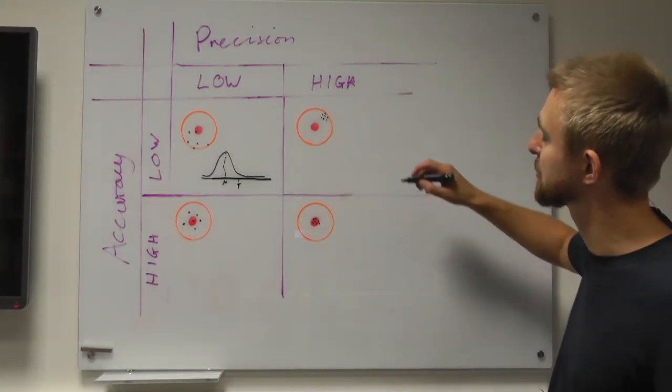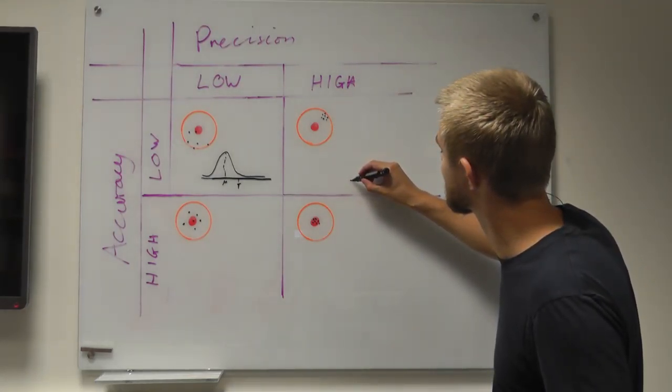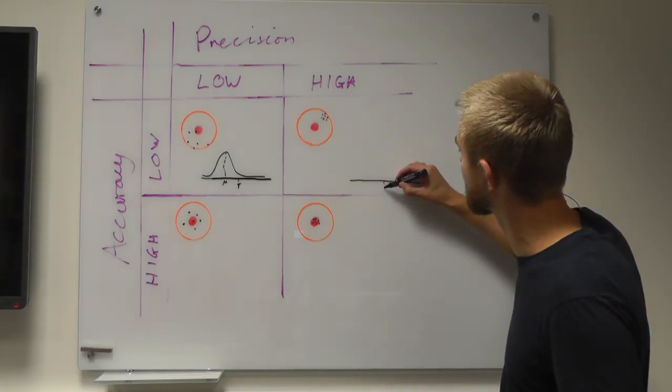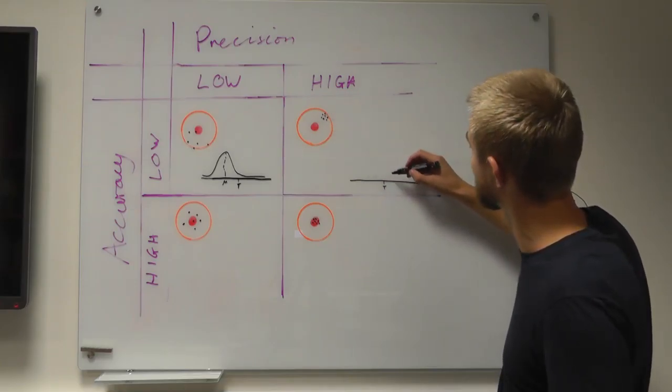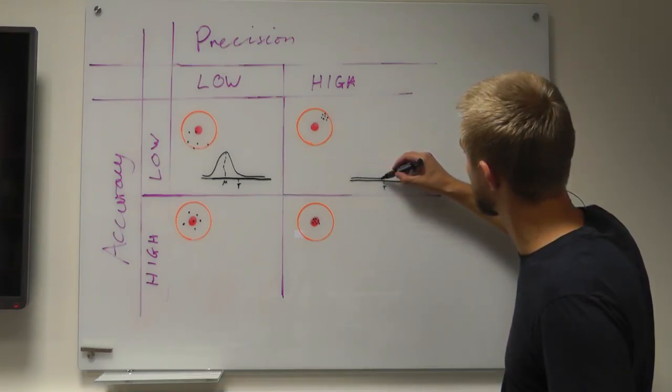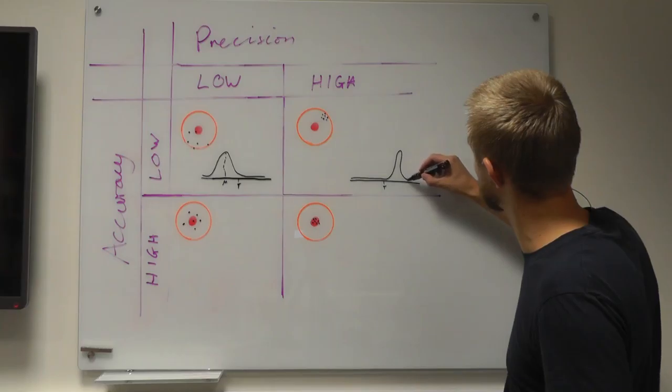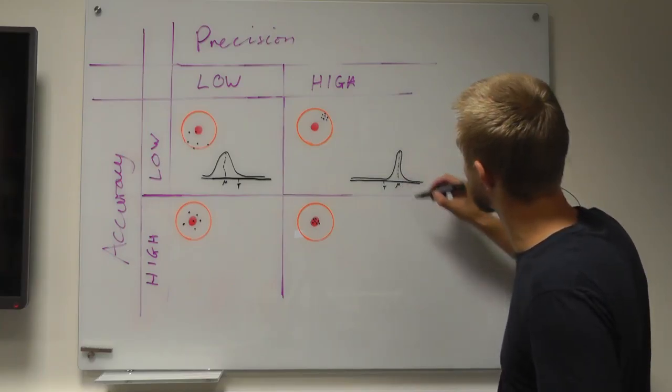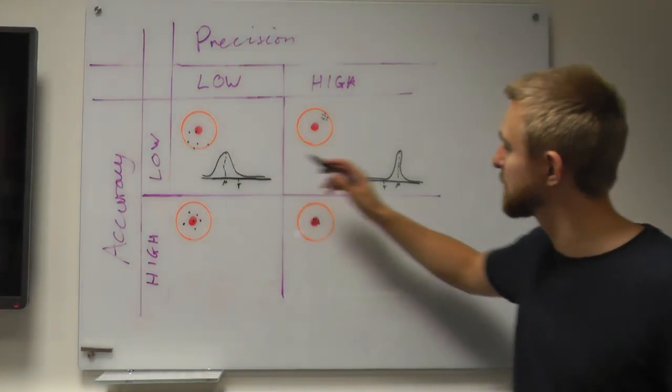Next we'll do the high precision, low accuracy. So try and guess in your head, draw a little picture in your head of what this is going to look like. So the target is here, but our system is over here, so it's going to look a bit like... So it's a tight distribution compared to the last one, but I'm afraid it's not close to the target.